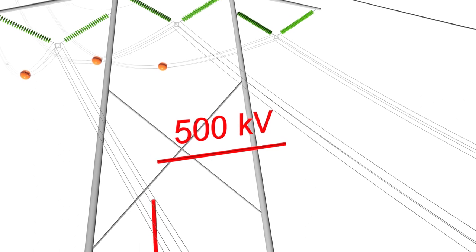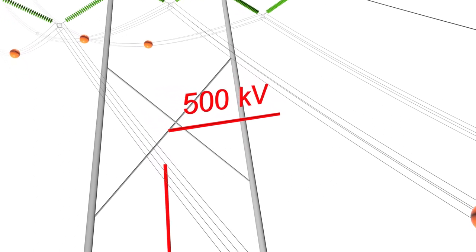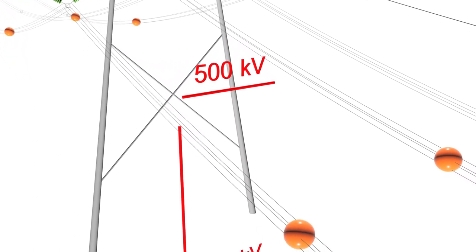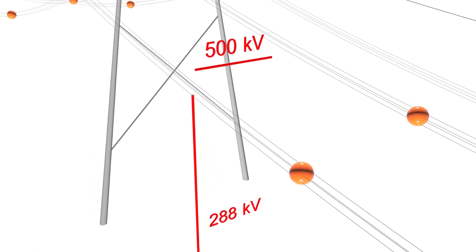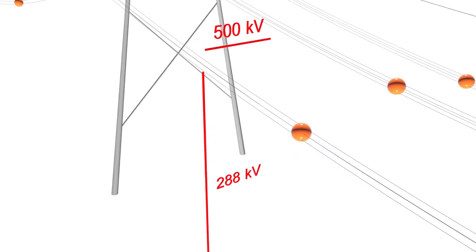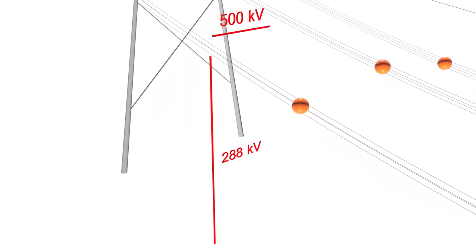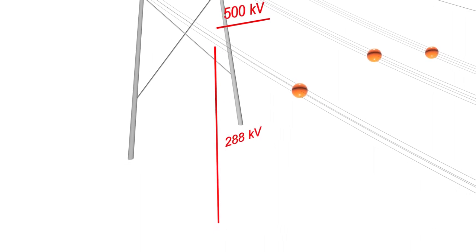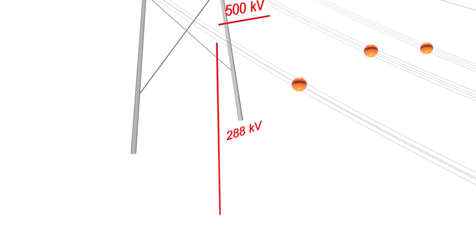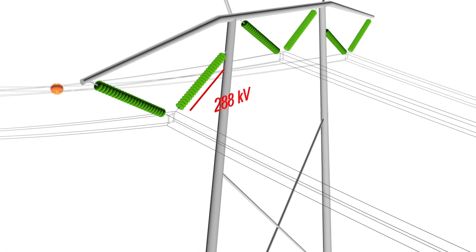The voltage between phases is around 1.7 times the voltage between a phase and the ground. For a 500 kilovolt transmission line, the voltage between a phase and the ground is 288 kilovolts.